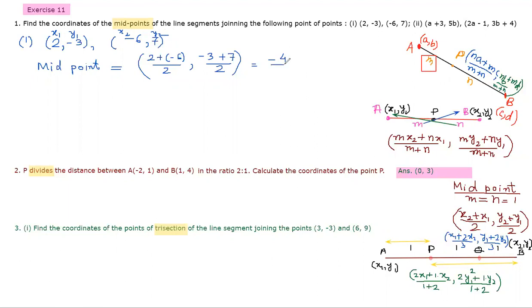So 2 plus -6 is -4, divided by 2 gives -2. And -3 plus 7 is 4, divided by 2 gives 2. So the answer to the first question is (-2, 2). Simple.